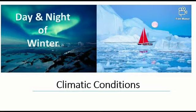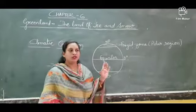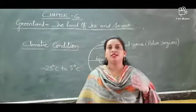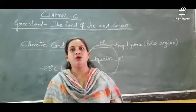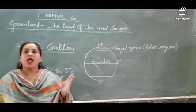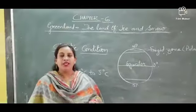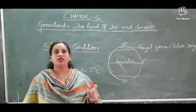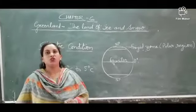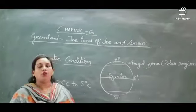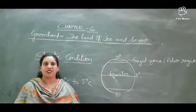During the summer season there is bright sunshine and the sun never sets for many weeks. The general weather is sunny and rainfall is less, but the temperature remains below freezing point. We can conclude that the temperature of Greenland always lies below the freezing point.